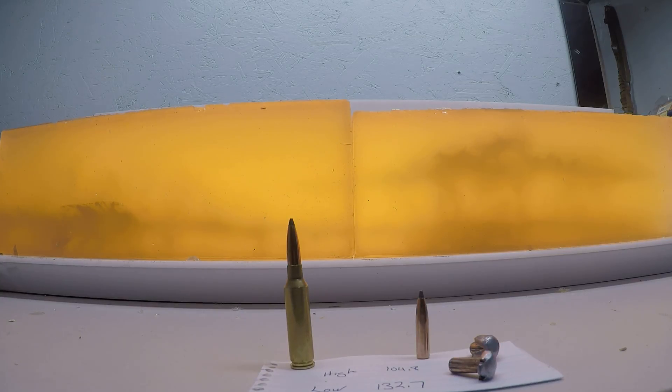Part 2 to do an overview on the range results of the 140 grain Nosler partition 264 bullet shot out of the 6.5 Creedmoor. The high velocity one was running just over 2,700 feet per second with a retained weight of 104.8.